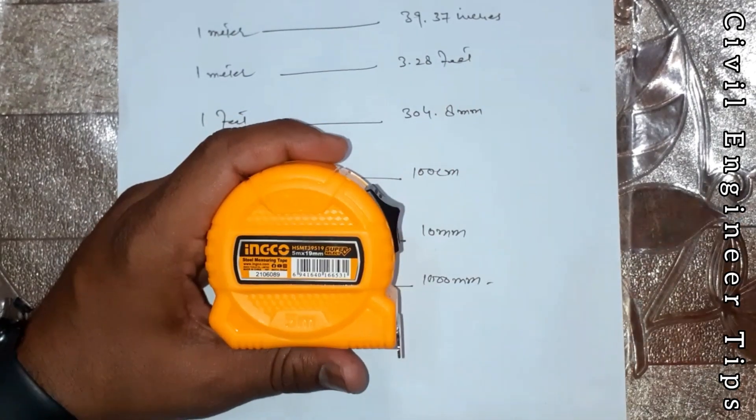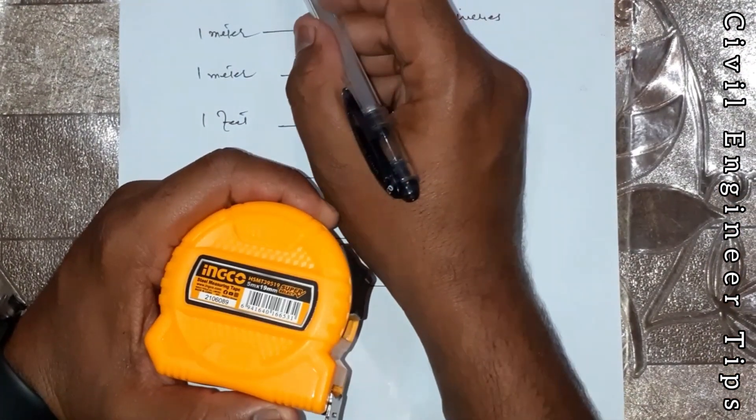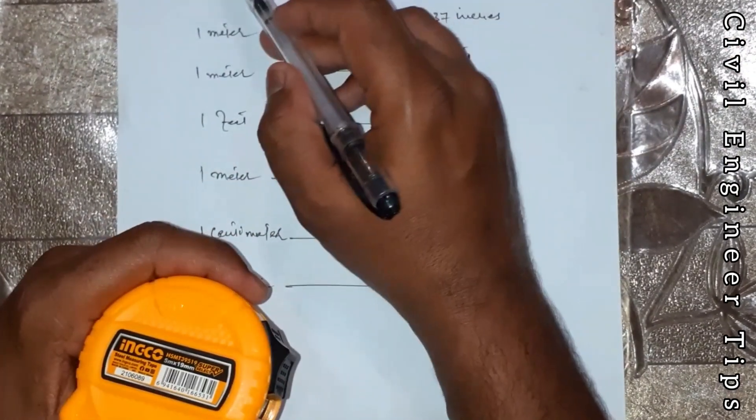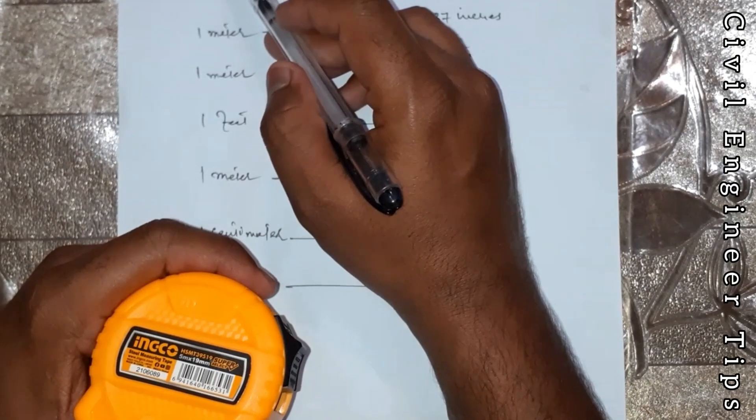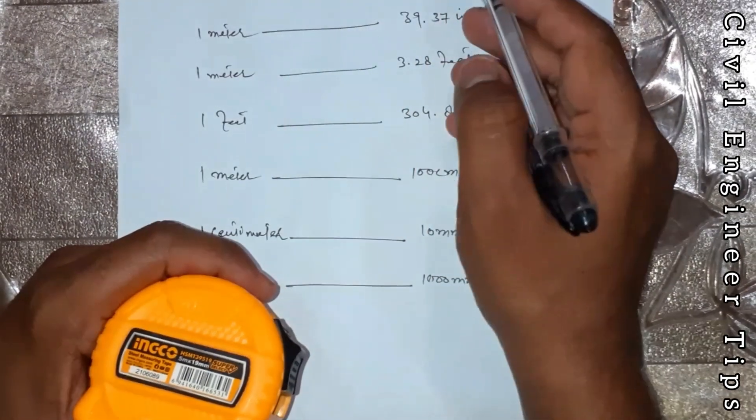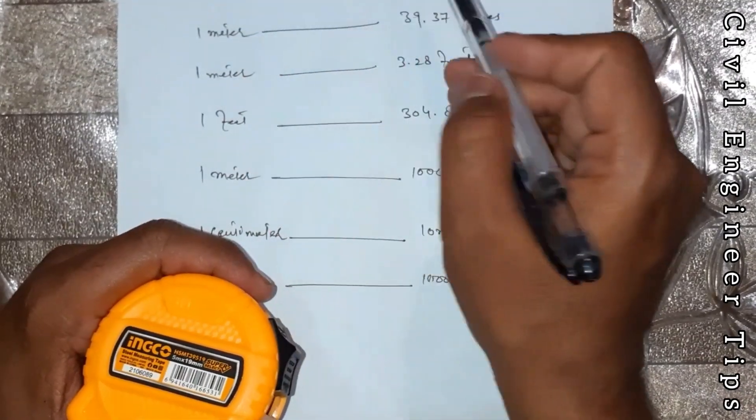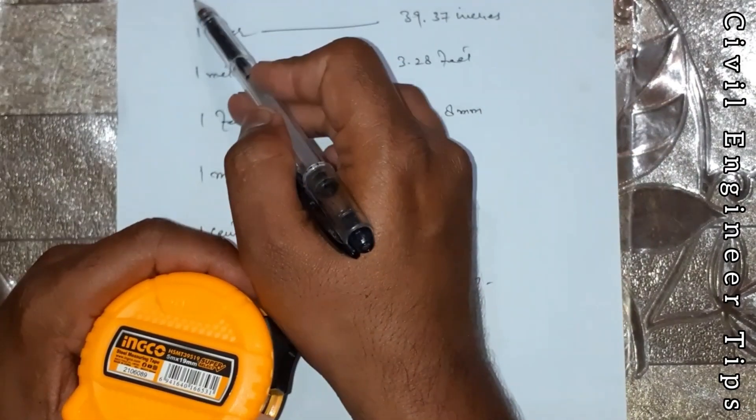Let's start the topic. Friends, as you know well, the basic dimension units are in different figures. One inch is equal to 2.54 centimeters. I already explained this in my last videos. One foot is equal to 12 inches, one meter is equal to 39.37 inches, one meter is equal to 3.28 feet, one foot is 305...